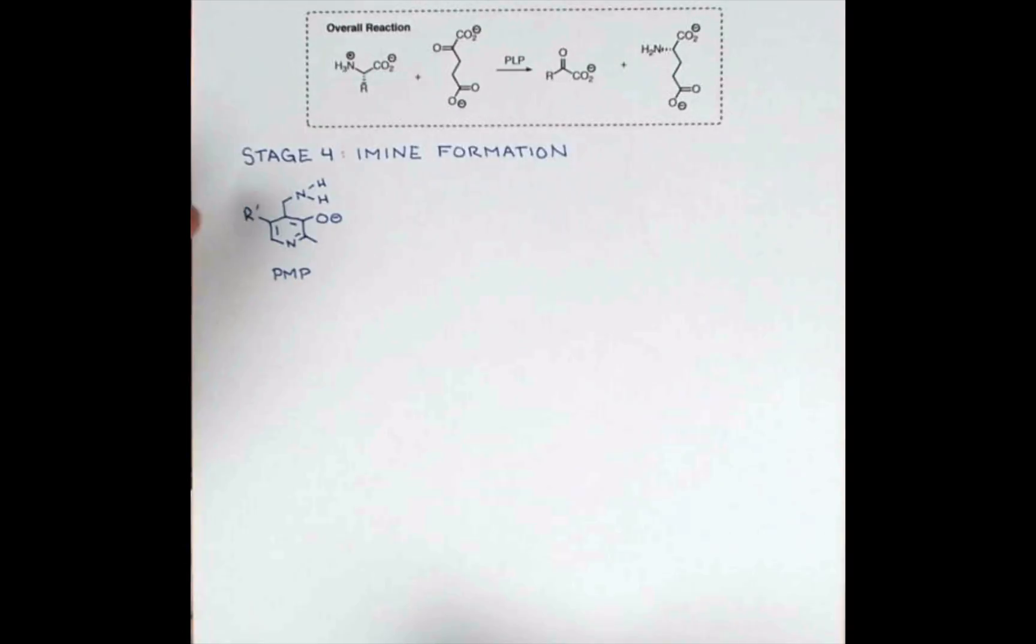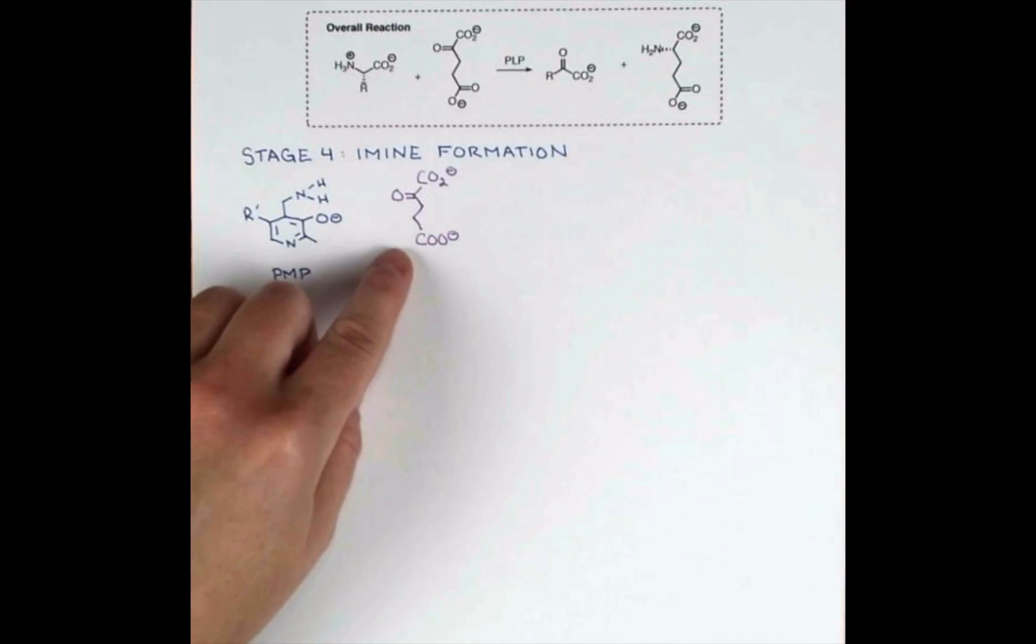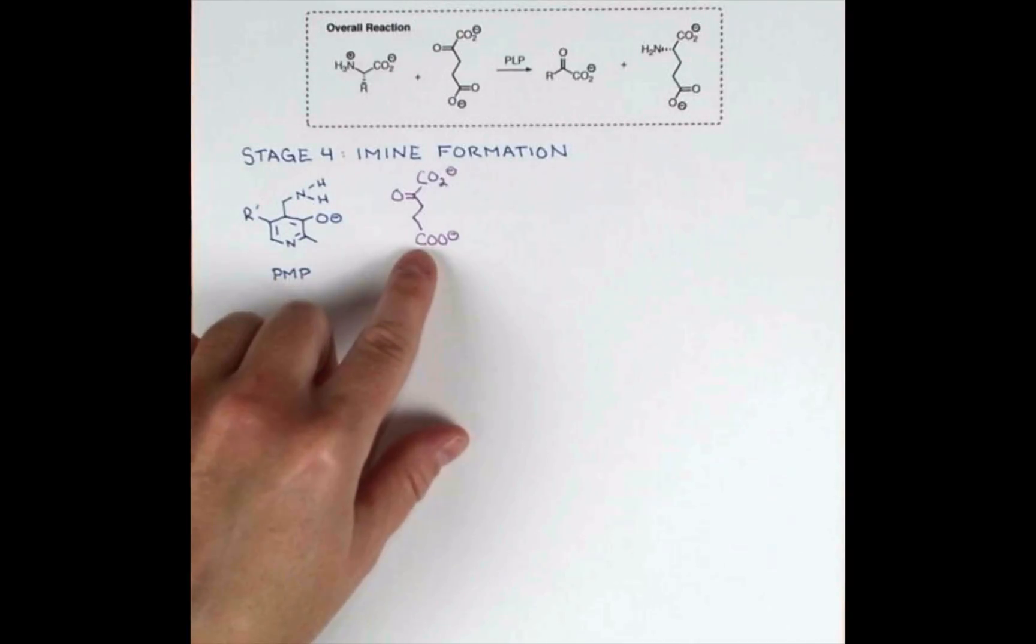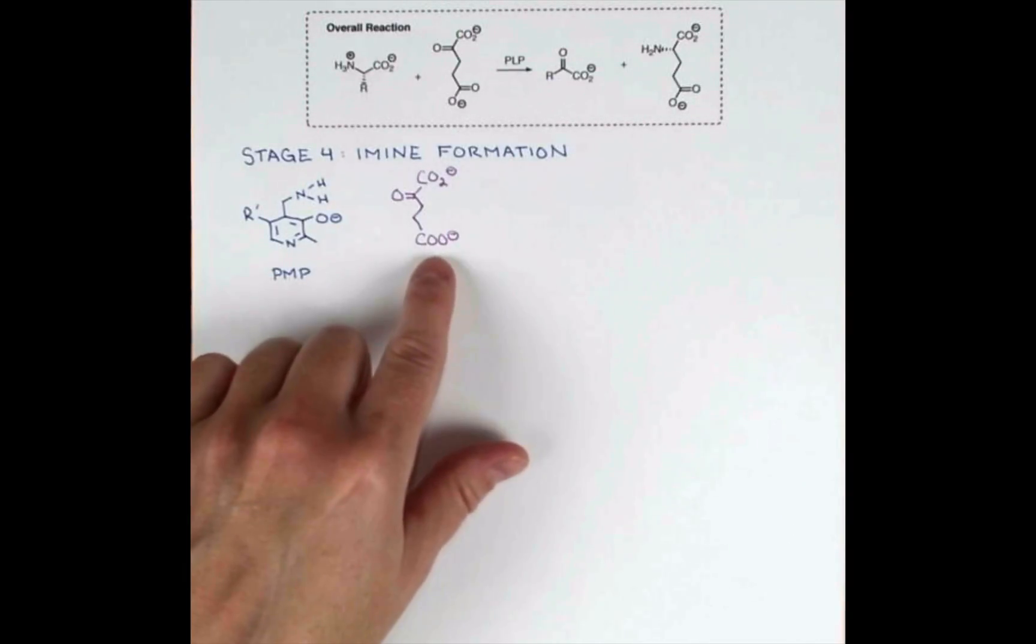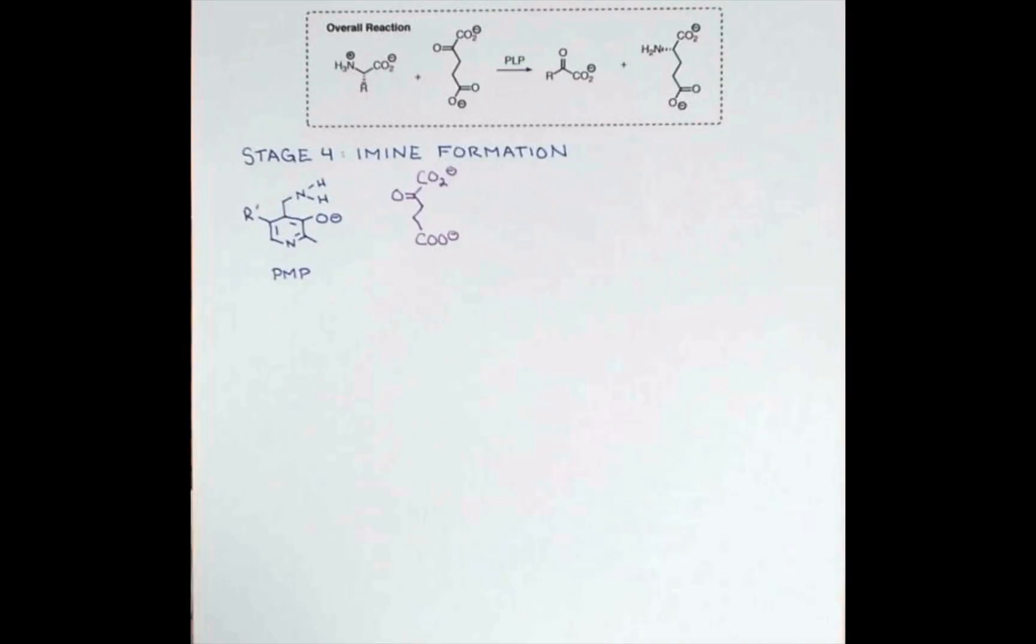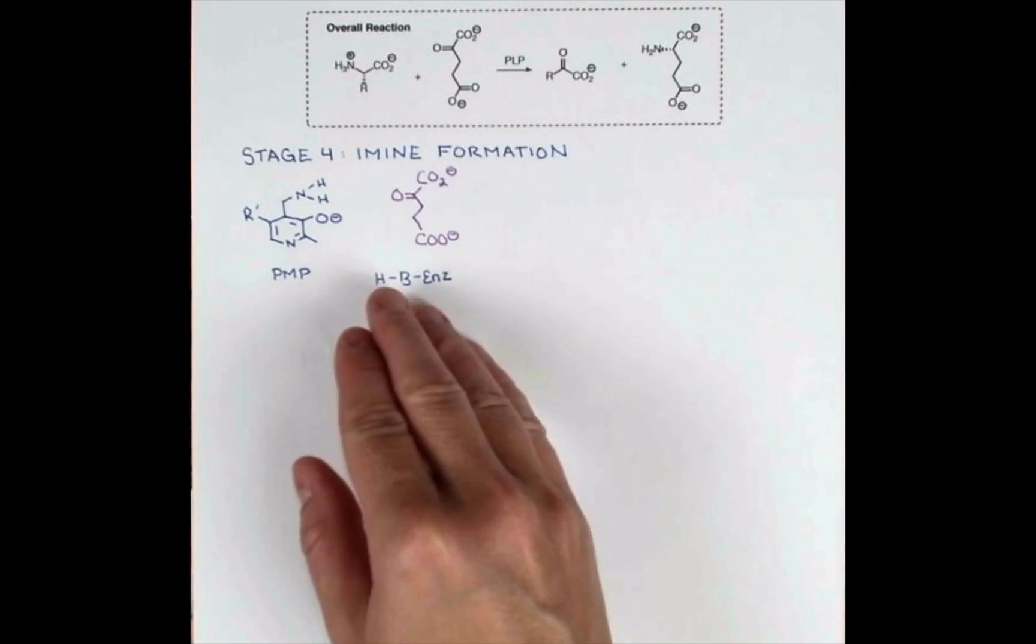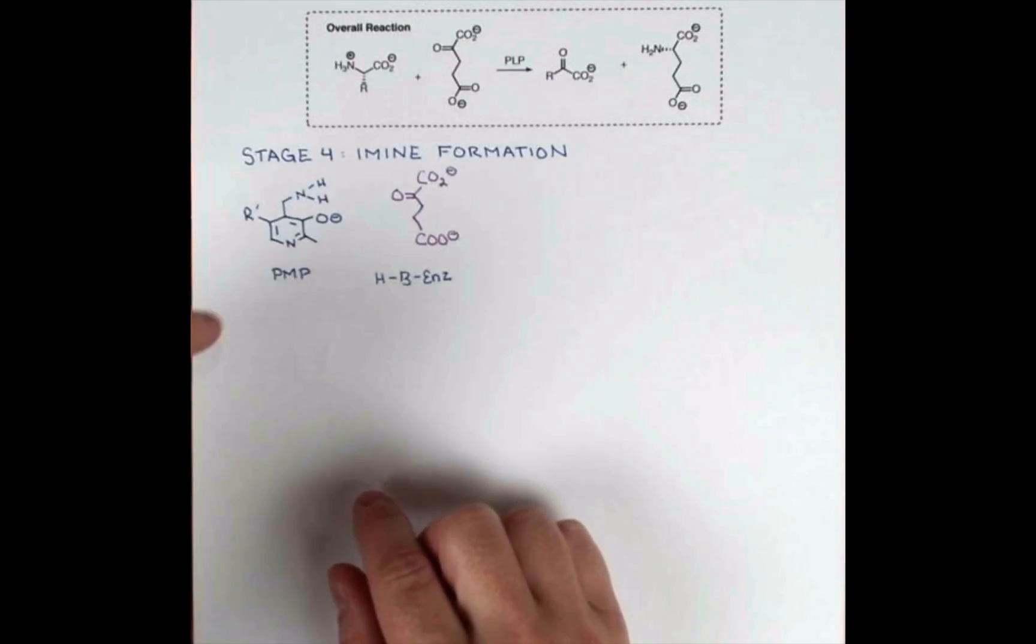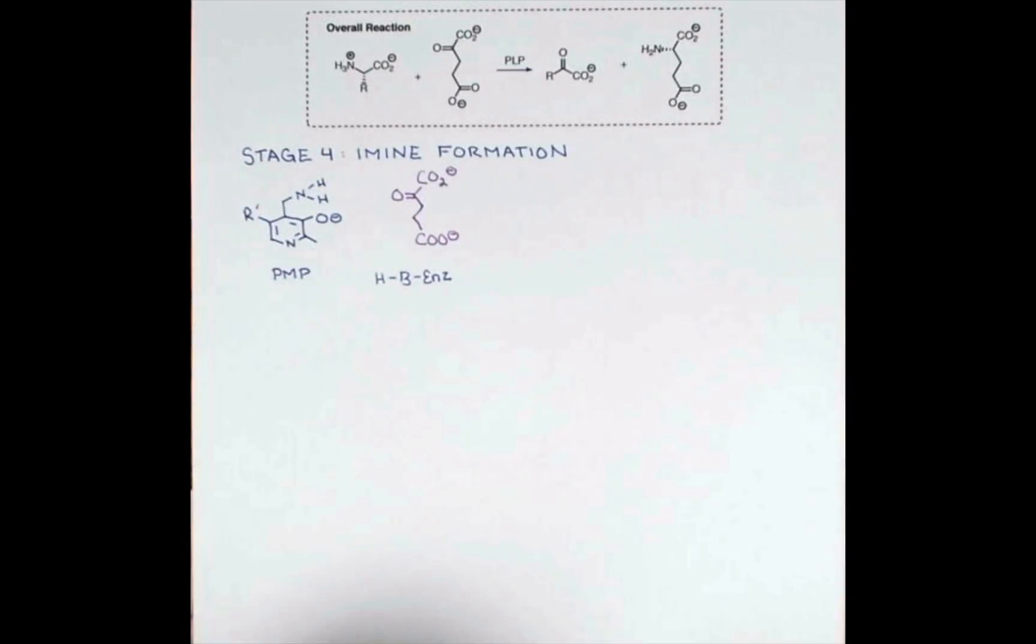Here's PMP. In the last video, this amine group was colored purple because it had come from the amino acid, but I'm just going to start with this all in blue so we can keep track of this amine group once again. Here's our molecule of alpha-ketoglutarate. I've abbreviated each of these carboxylic acids a little differently. We could also put CO2- down here as well. And we're going to need an acidic enzyme residue in this step because the amine is going to attack the carbonyl and we'll need a proton to protonate that.